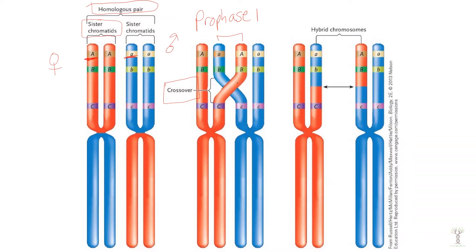After crossing over occurs, each chromosome breaks and switches, and then we end up with hybrid chromosomes. When crossing over occurs, this crossing over point can occur at a different location every single time. So the next time crossing over occurs, it could happen way up here.